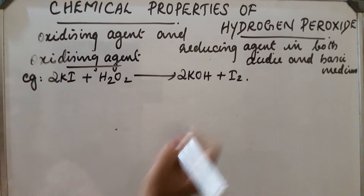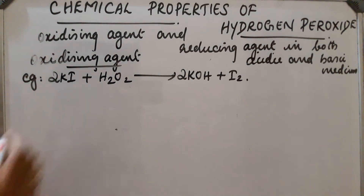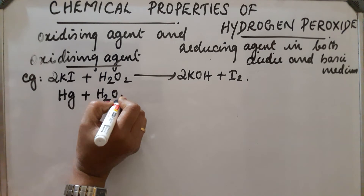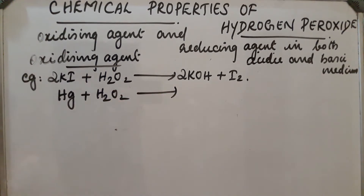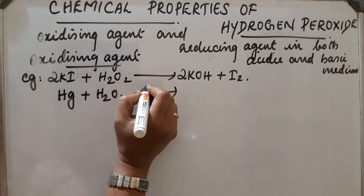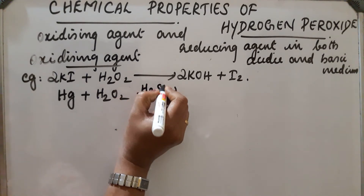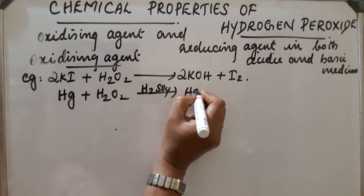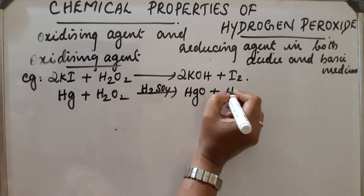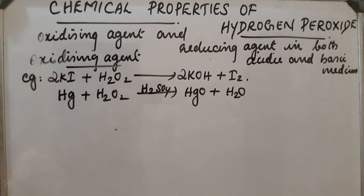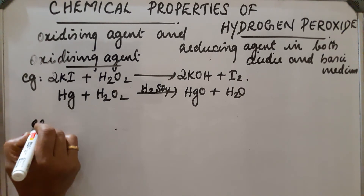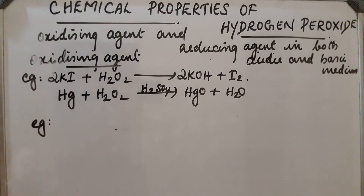Another example: Hg (mercury) in the presence of H₂SO₄ (sulphuric acid) reacts with H₂O₂ to form HgO plus H₂. Here H₂O₂ acts as an oxidizing agent.